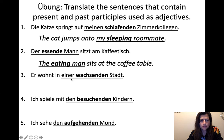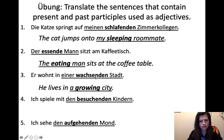Er wohnt in einer wachsenden Stadt comes from wachsen, meaning to grow. You know the -d is there because of the present participle, and then -en is there because it's an adjective ending. Take those off, get wachsen, look it up — to grow. He lives in a growing city. That was not too tricky.